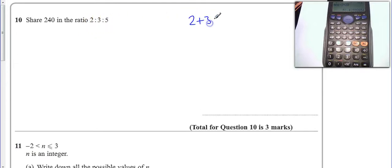So I know that 2 plus 3 plus 5 is equal to 10 parts. So I'm going to do 240 divided by 10, which gives me 24.